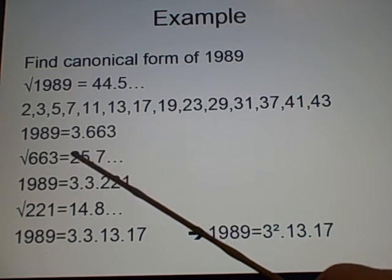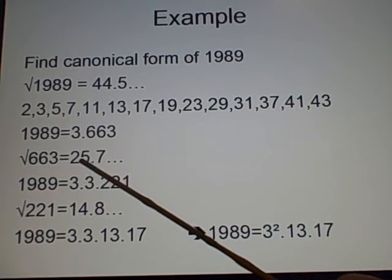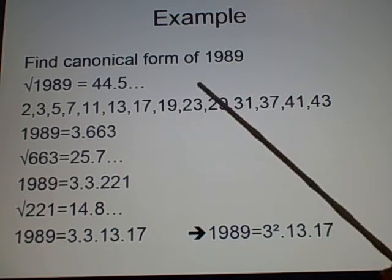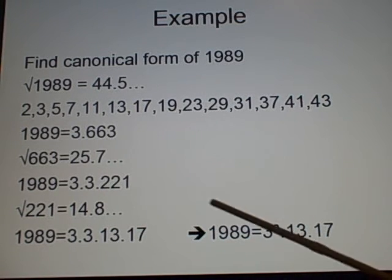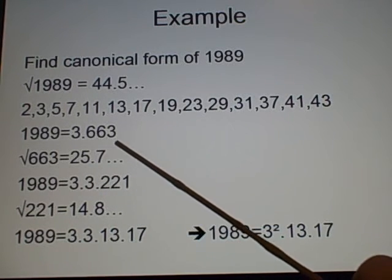We carry on again. Square root of 663 is 25.7 and so on. So all the ones less than 25, so anything less than here. And we divide again. So we try 2, nope, 3, it does work. So far we've got 1989 is 3 times 3 times 221, because 3 times 221 is 663.